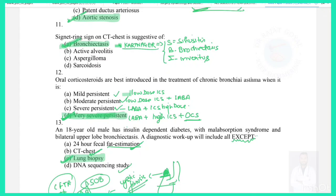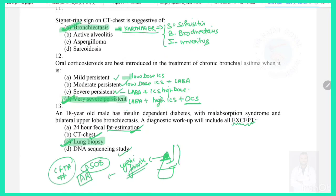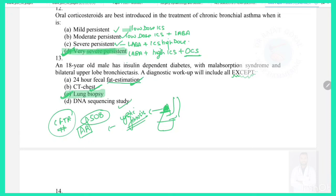Question 12: Oral corticosteroids are best introduced in the treatment of chronic bronchial asthma when — oral steroids are not normally used in asthma, but when asthma is not controlled with low-dose inhaled corticosteroids and LABA, the last resort is oral corticosteroids. The answer is very severe persistent asthma not controlled by long-acting beta agonists and high-dose ICS.